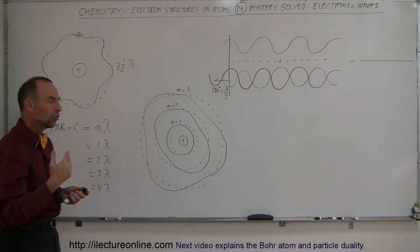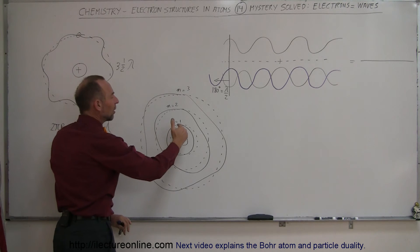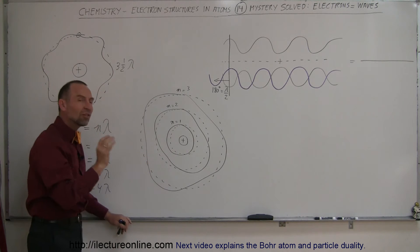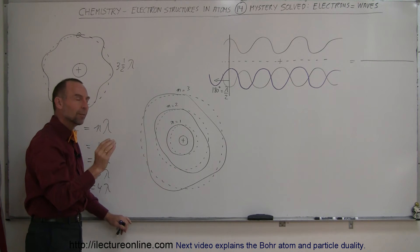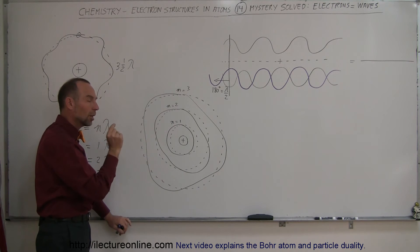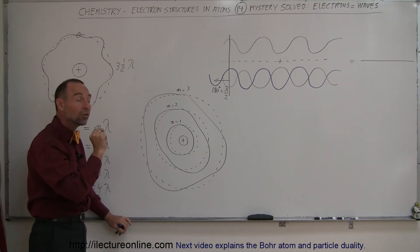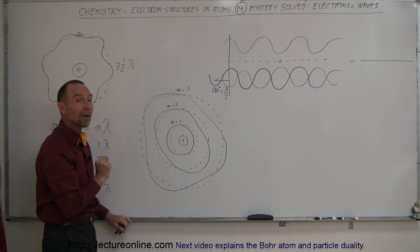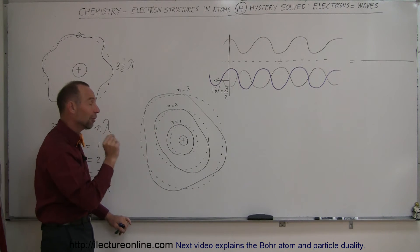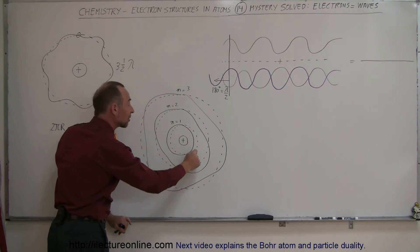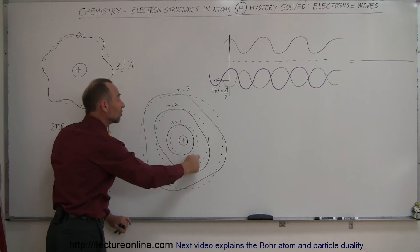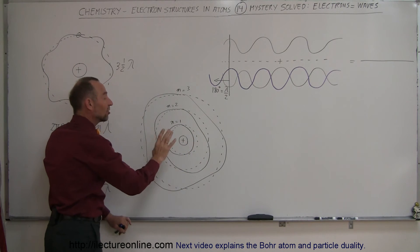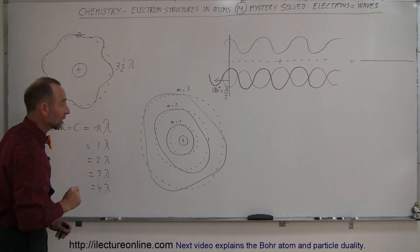Now, we will see in the future that the electron can deviate a little bit from that, just temporarily, because the Heisenberg uncertainty principle allows for small deviations from the norm for very short periods of time. But typically, the electron will only exist in orbits where each orbit is exactly equal to an integer number of wavelengths.